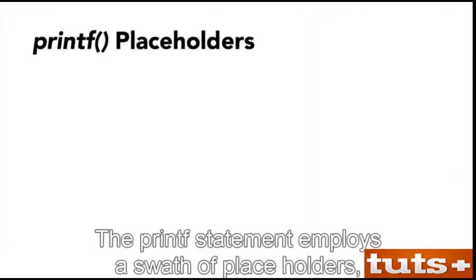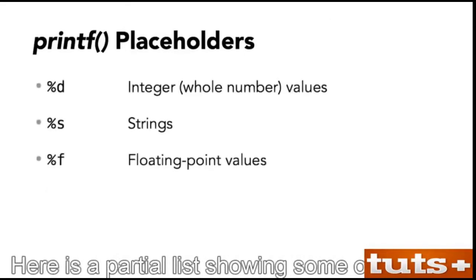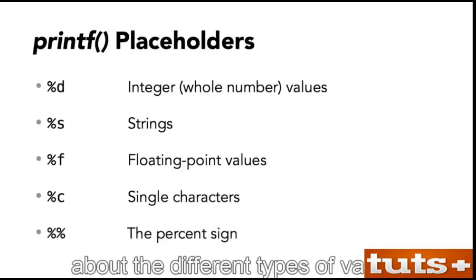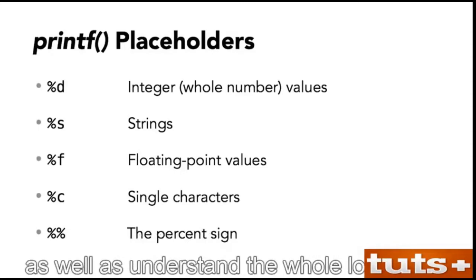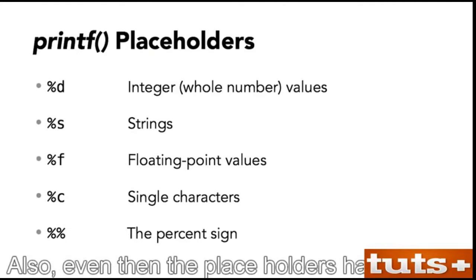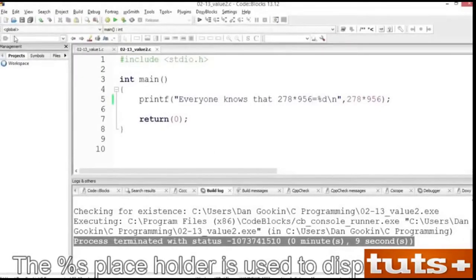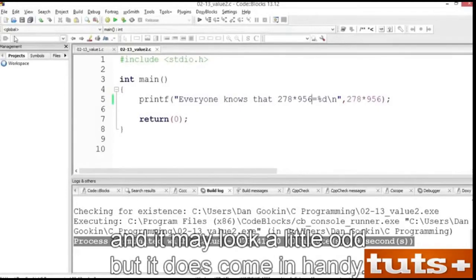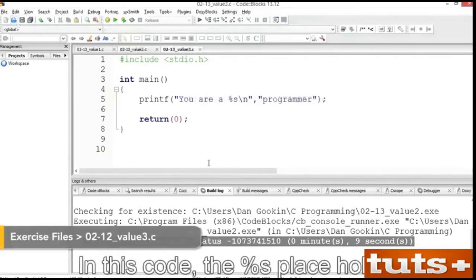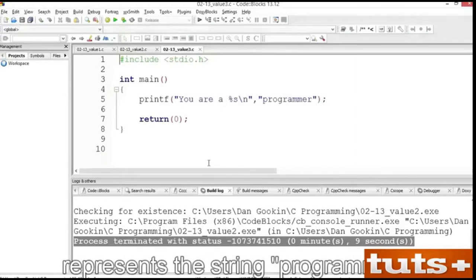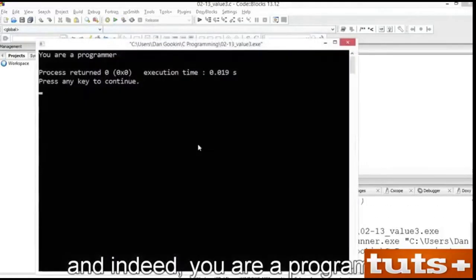The printf statement employs a range of placeholders, each for a specific type of value. Here is a partial list showing some of the more common placeholders. The %s placeholder is used to display strings. Open exercise file value3.c. In this code, the %s placeholder represents the string 'programmer,' which is the second argument of the printf function. Build and run this code. And indeed, you are a programmer — but what kind of programmer?